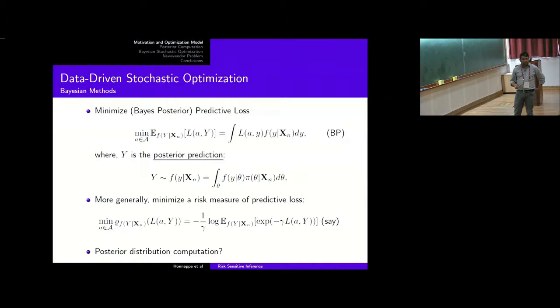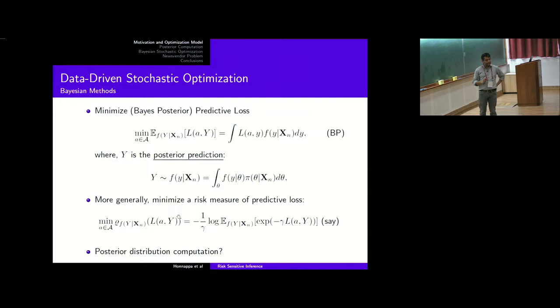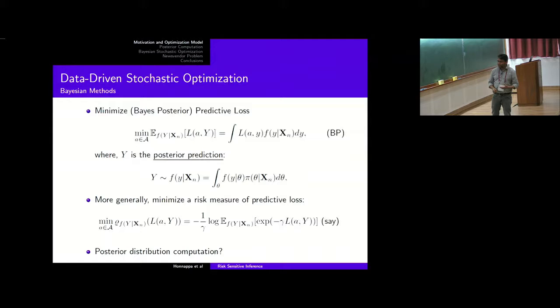The problems we are interested in force us to think about risk measures, because we are worried about tail risks. Rather than optimizing the expected loss, one might wish to optimize a risk measure of the loss. In this talk, I'm going to discuss the log-exponential risk measure as one specific example. This is where the term 'risk-sensitive' comes from — risk sensitivity has been studied in control theory and economics.